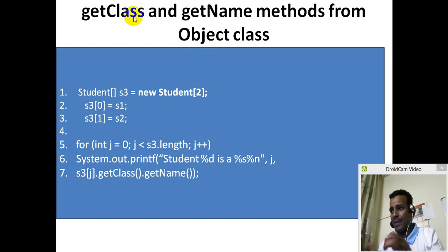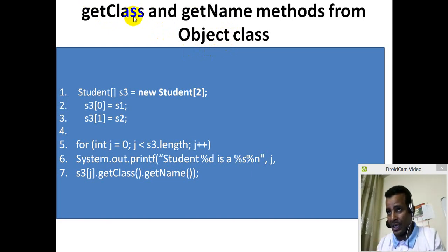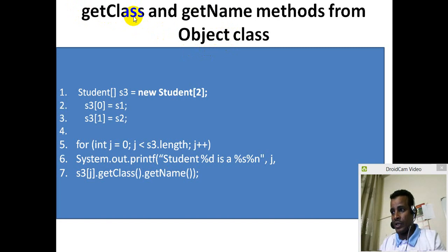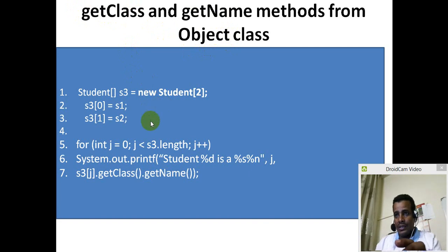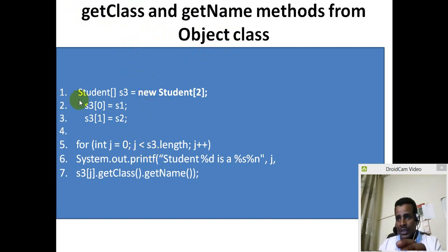Get class magnet, access class. Get name is a magnet. This is a magnet. We are going to get this magnet. You can call it a magnet.